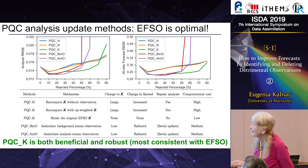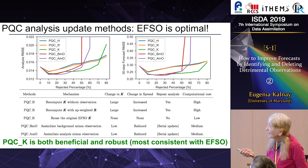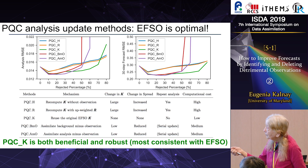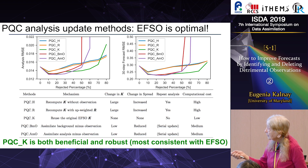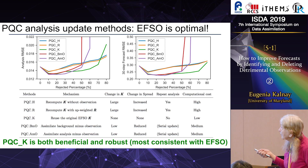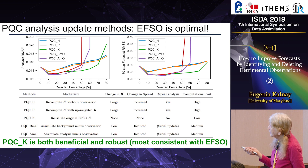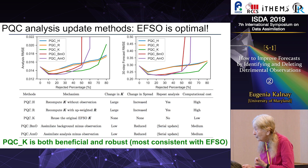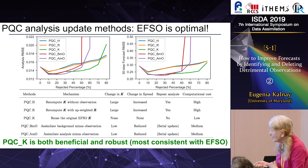He obtained the results, and this shows the analysis error depending on the rejected percentage. They all get bad if you reject 50–60% or more. But the one that remains least bad up to 70% is the green line, which is 'reuse the original EFSO' — PQC K. After 30 forecast steps, it is even more impressive: the green remains best up to 70% rejection. So PQC K is both beneficial and robust — it remains stable without blowing up — because it is most consistent with the original EFSO.